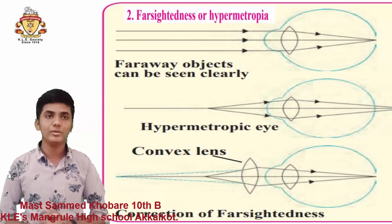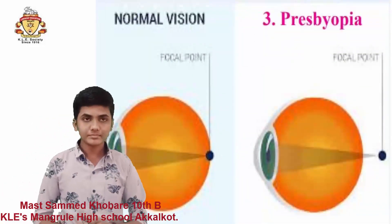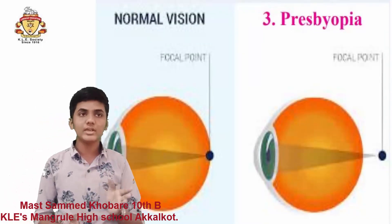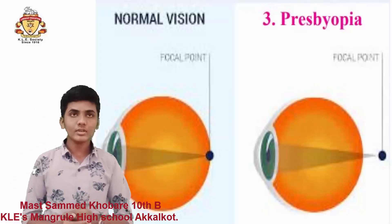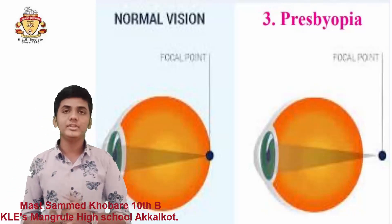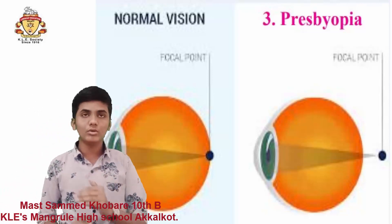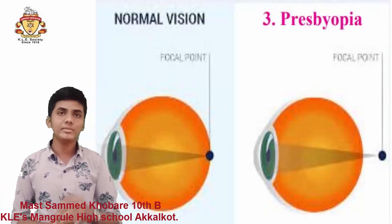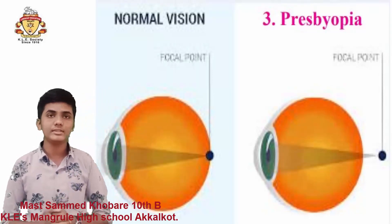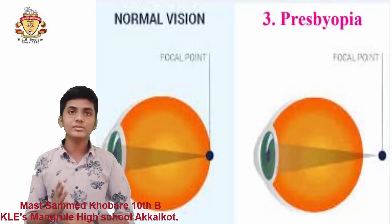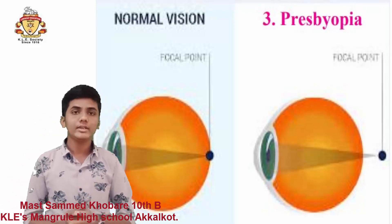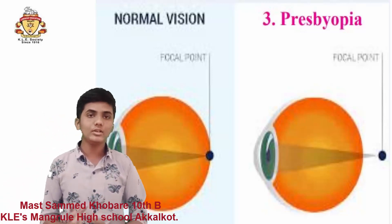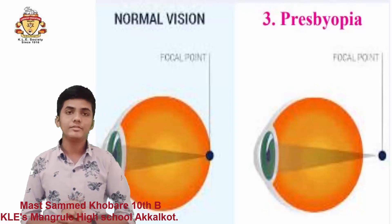Last but not least is presbyopia. In presbyopia, the converging power or focusing power of the lens of our eyes decreases with age. Many older people cannot see nearby objects due to this. Some people with presbyopia can suffer from both nearsightedness and farsightedness. In such critical cases, we can use a bifocal lens. In such lenses, the upper part is a concave lens which corrects nearsightedness and the lower part is a convex lens which corrects farsightedness.